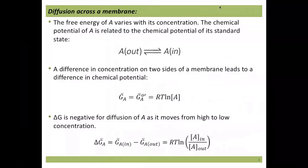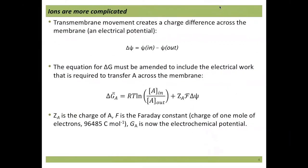If there's a difference between A outside and A inside, that will be a spontaneous process — though not necessarily a fast one. One important thing to mention is electrical potential: if we have a difference in the number of ions on one side of a membrane versus the other, that sets up an electrical potential. It's similar to a concentration gradient, but in this case we're looking at charges.